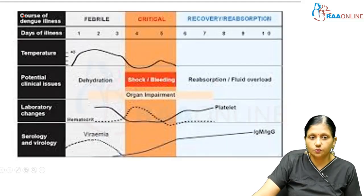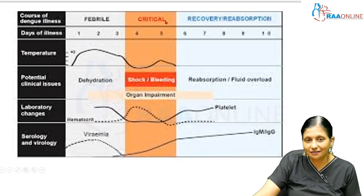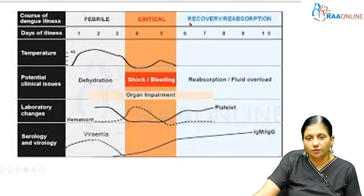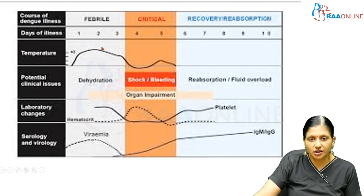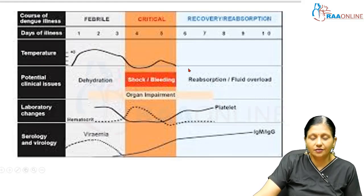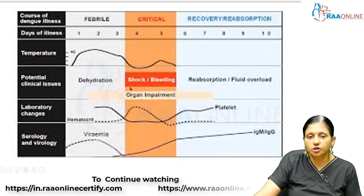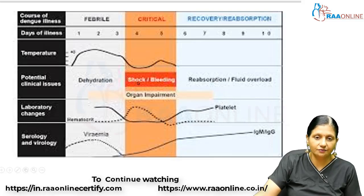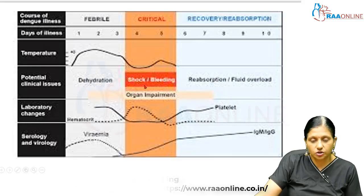The disease progresses through three phases: an initial febrile phase lasting 3 to 4 days, a critical phase from days 4 to 6, and a recovery/reabsorption phase from day 6 to around day 12. In the febrile phase the major problem is dehydration; in the critical phase the patient can develop hypothermia, shock, or bleeding. When bleeding develops it is called hemorrhagic fever; when shock develops it is called Dengue shock syndrome.